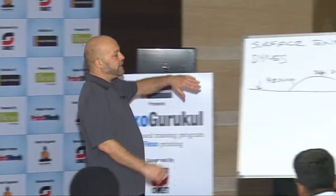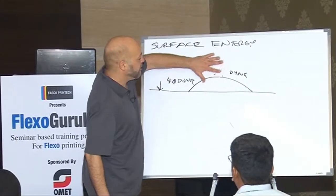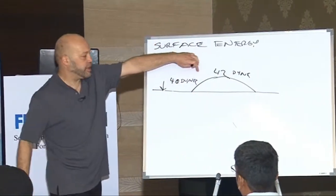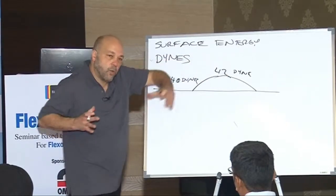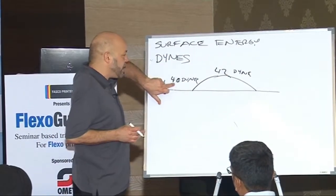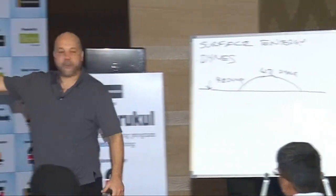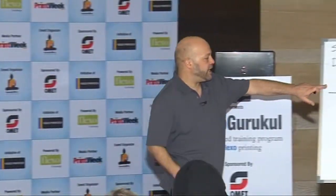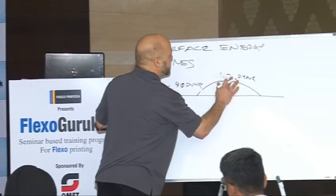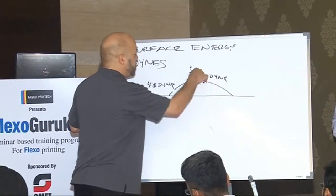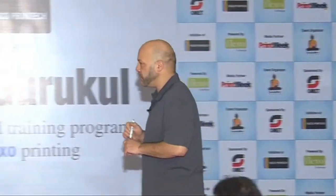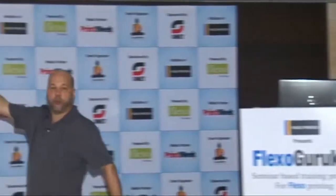Let's say a surface had a higher surface energy of 42 dynes — we still have that same relationship where the ink wants to keep to itself. So we might add a surfactant to lower the surface tension of the ink so that the relationship becomes favorable to the ink laying down on the surface of the substrate instead of keeping to itself.